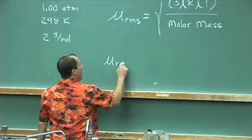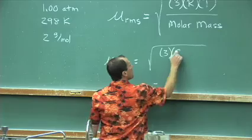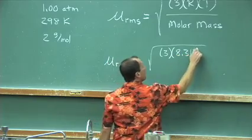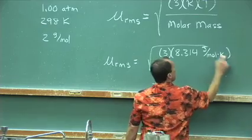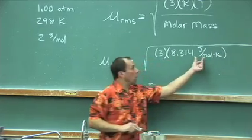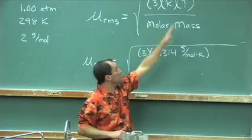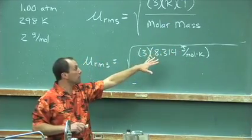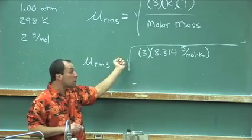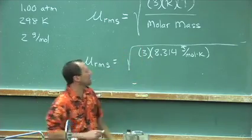μ_rms is equal to the square root of the number three times 8.314 joules over moles times kelvins. A mole will cancel with the molar mass in a moment. Our kelvins will cancel with the temperature. A joule is a unit of energy, and it's essentially a kilogram meter squared over second squared. So things will work out canceling just nicely in a moment.